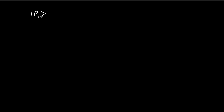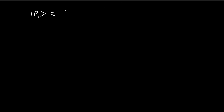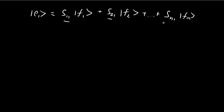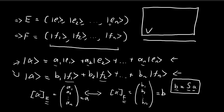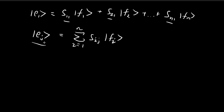Now I'm going to define each vector within E in terms of the vectors within F. Since E1 is a vector within the vector space V, I can express E1 as a linear combination of the vectors within F. The scalars used will depend on what E and F are. This generalizes: for the j-th vector within basis E, we get the formula Ej = sum over i of S_ij times F_i. This is how each vector within E is defined as a linear combination of the vectors within F.